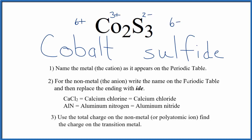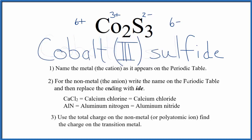So we're going to put a 3 between these names using Roman numerals — I, II, III — in parentheses. The name for CO₂S₃ is cobalt(III) sulfide, and the Roman numeral III reflects the 3 plus charge on cobalt.